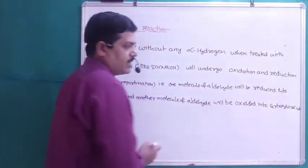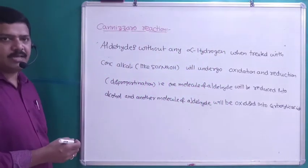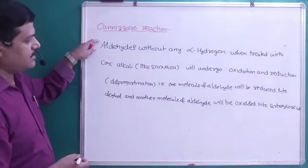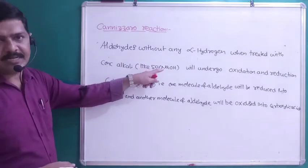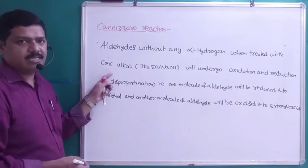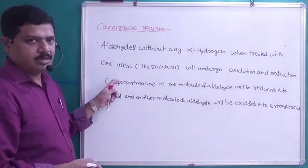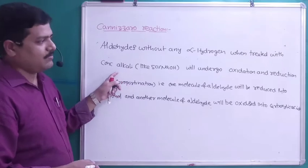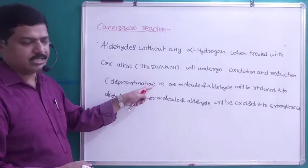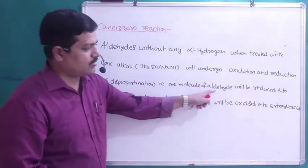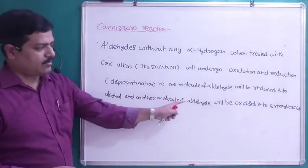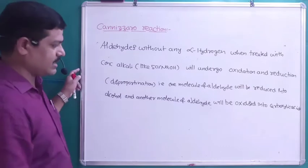Cannizzaro Reaction is given by aldehydes without any alpha hydrogen. When these aldehydes are treated with concentrated alkali like 50% NaOH or 50% KOH, they will undergo oxidation and reduction. In redox reactions, when a particular element undergoes both oxidation and reduction, that is called a disproportionation reaction. So one molecule of aldehyde will be reduced into alcohol and another molecule of aldehyde will be oxidized into carboxylic acid.